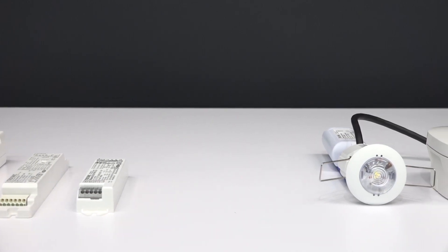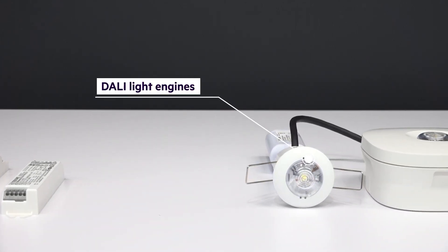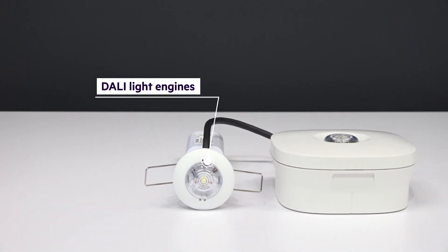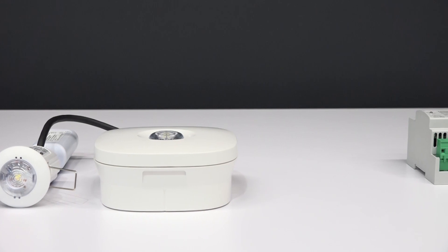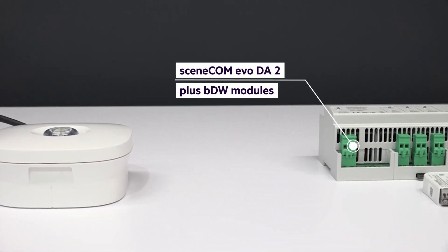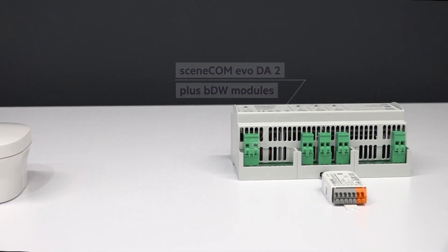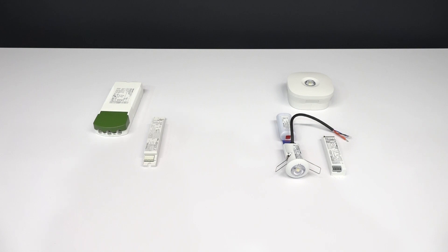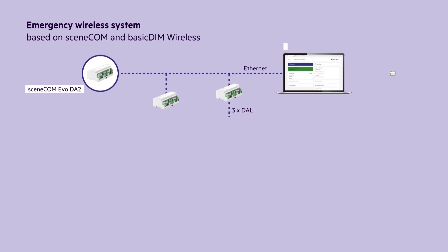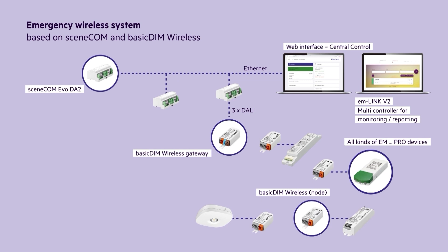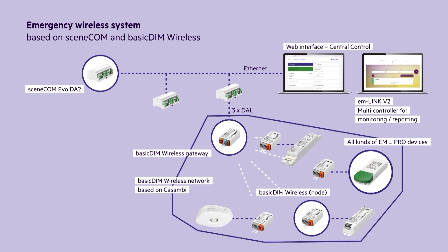All existing Tridonic DALI emergency drivers and light engines can be used to build up wireless emergency systems. Depending on the integration of the DALI power supply in the emergency driver, the passive or active basic DIM wireless module is used as a node to enable wireless communication within the luminaire. The basic DIM wireless DALI gateway on the side of the SYNCOM EVO DA2 enables the connection between the wired and the wireless network.